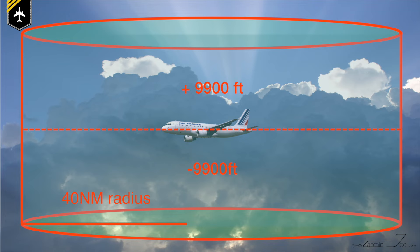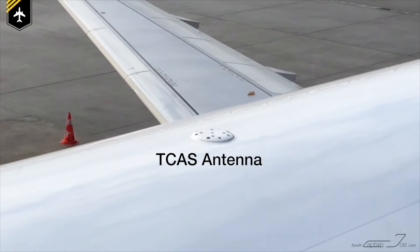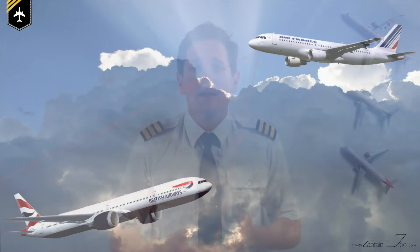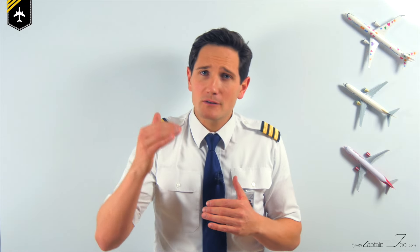The TCAS has two antennas fitted, one at the top of the fuselage and one at the bottom. The antennas are on a constant lookout for transponders of intruders, because from the transponder signals the TCAS determines for each intruder its relative bearing, its range and closure rate, and its relative altitude if available. Many glider planes and smaller aircraft only have a Mode A transponder which only indicates their position and not their altitude.